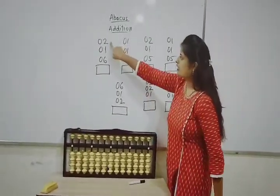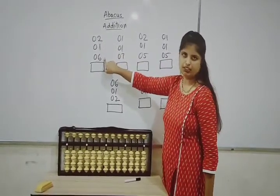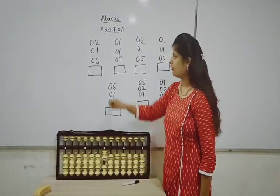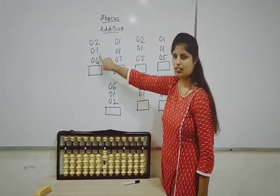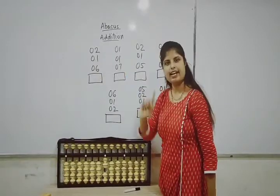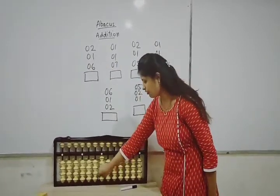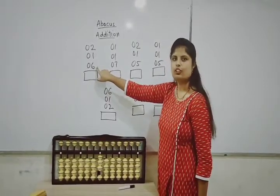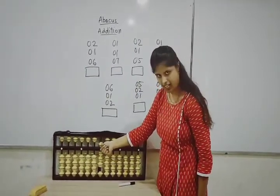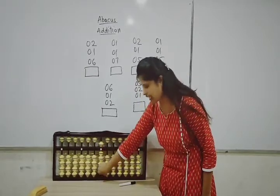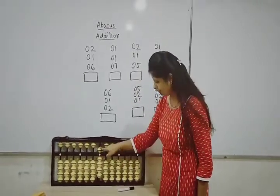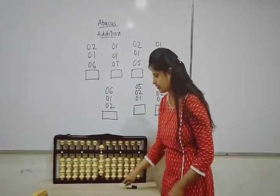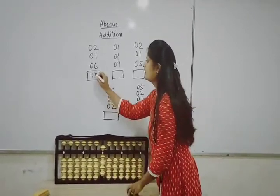Now we will see addition using 3 numbers. First number is 2, so put 2 bits up. Next number is 1 — no sign means addition — so 1 bit up. Next number is 6: for 6, we need to bring the upper 5-bit down and add one lower bit up, so 5 plus 1 equals 6. Now count the total bits: 5, 6, 7, 8, 9 — our answer is 9.